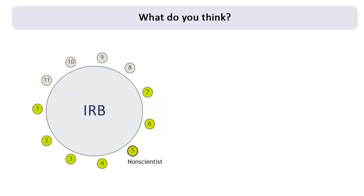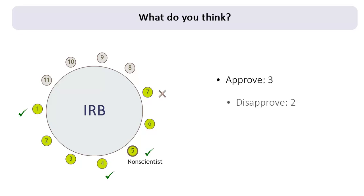The convened IRB then moves on to review Dr. Brown's research. The seven members voted as follows: Approve, three. Disapprove, two. Abstain, two.